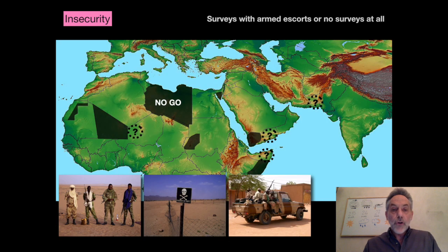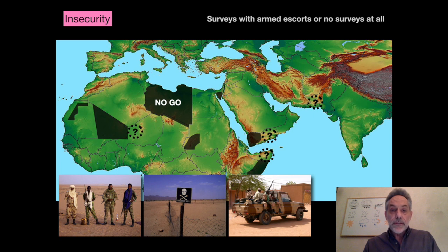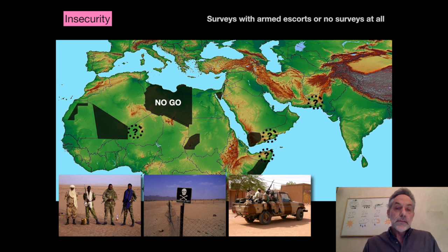This is further compounded by an increasing number of areas that simply cannot be entered by national teams — Libya, Northern Mali, Western Sahara, Darfur, Somalia, parts of Yemen — areas where security is not stable and teams must be escorted by the military. These issues of insecurity obviously impact the quality of the data and the coverage.